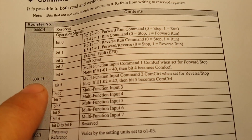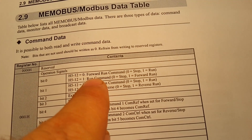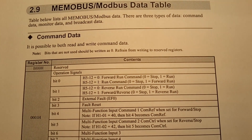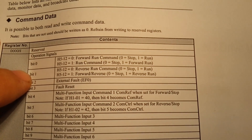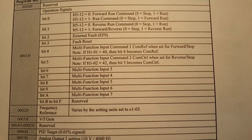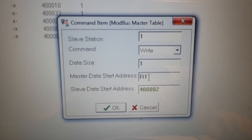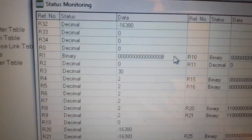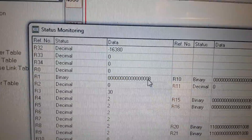The command value is 0001 hexadecimal. Each bit has a function: the first bit is the forward run command, and the second bit is the reverse run command. We type the master data start address to R1 — this R1 has bits, and the first bit starts the frequency inverter. This is the R1 command.